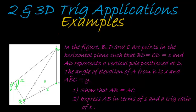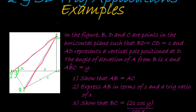The task is to show that AB is equal to AC. Before we continue, because AD is a vertical pole, it makes 90-degree angles with any of the horizontal lines — any vertical is 90 degrees to the horizontal. So we have two 90-degree triangles here.